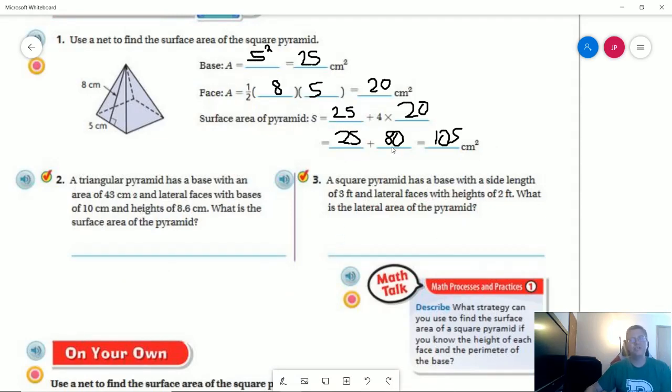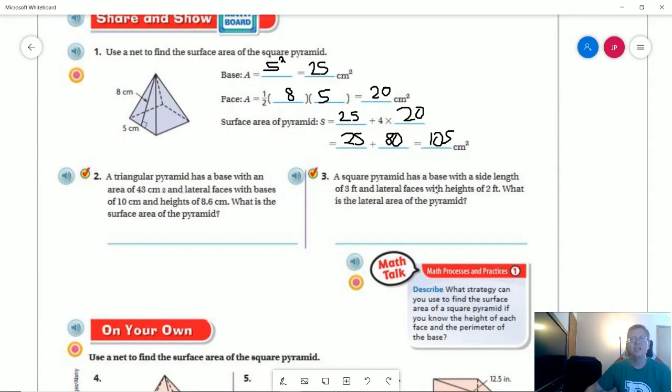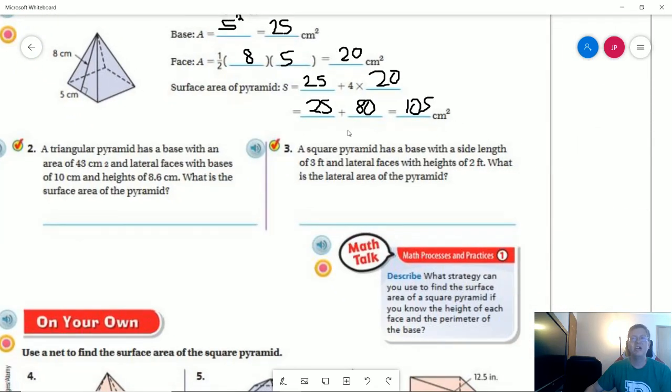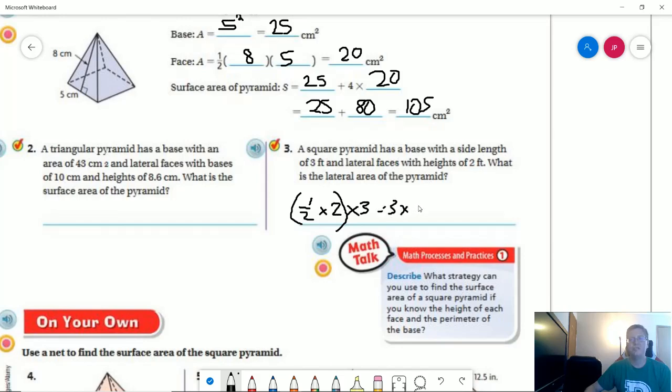All right, so the lateral area that they're looking for, which comes from the page that I skipped doing on the video, is going to be the area of all of the lateral faces. So we're going to have four lateral faces that are three for the base and two for the height. So I'm going to combine this. That's going to give us one times three equals three. There are four of those. And so that should give us a lateral area of 12 feet squared.